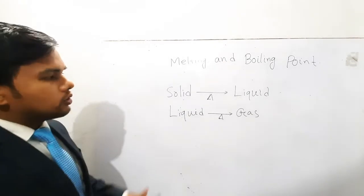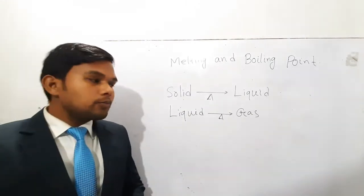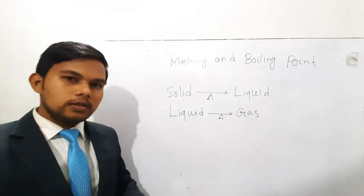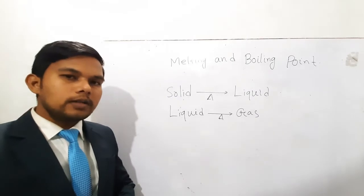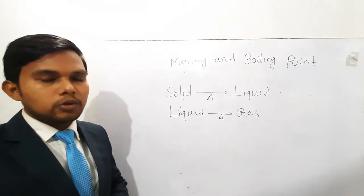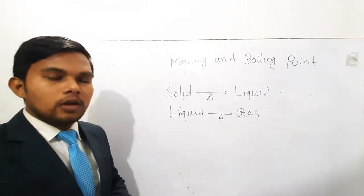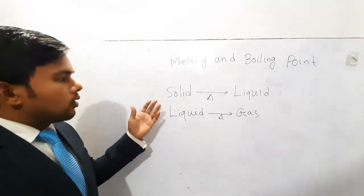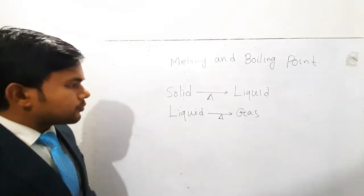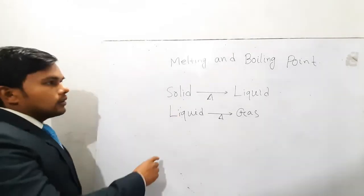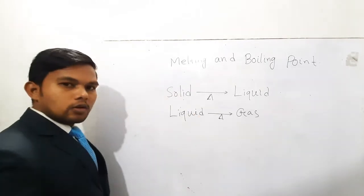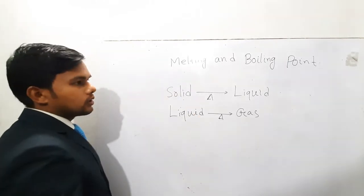Every pure substance has a definite melting point. But the melting point of an impure substance can vary from substance to substance. In the case of liquid substances, we define the boiling point.